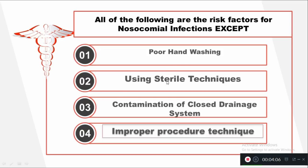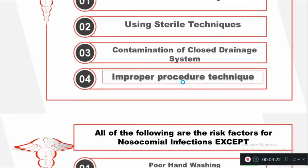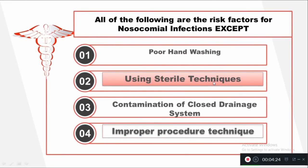Question number five: All of the following are risk factors for nosocomial infection except — Option one: Poor hand washing. Option two: Using sterile techniques. Option three: Contamination of closed drainage system. Option four: Improper procedure technique. The right answer is using sterile techniques, which prevents nosocomial infection, whereas poor hand washing, contamination of closed drainage systems, and improper procedure techniques all increase the risk.